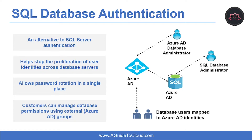With SQL Authentication method, the user submits a user account name and associated password to establish a connection. This password is stored in the master database for the user account linked to a login, or stored in a database containing the user accounts not linked to a login. The second type of authentication method is using Azure Active Directory Authentication. With this authentication method, the user submits a user account name and requests that the service use the credential information stored in Azure Active Directory.